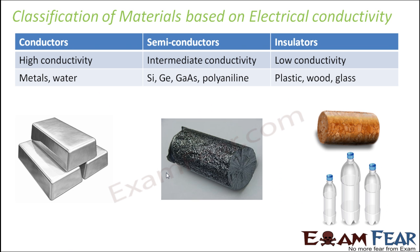Based on electrical conductivity, there are three types of materials: conductors, semiconductors, and insulators. Conductors have high conductivity — they allow electric current to pass through them, which is why they are called good conductors. Examples of conductors are metals and water.